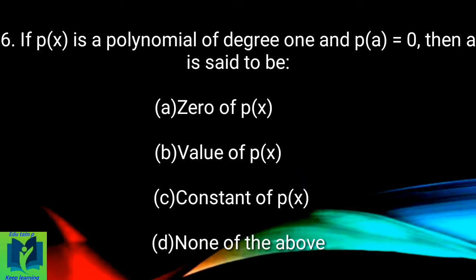If p(x) is a polynomial of degree 1 and p(a) is equal to 0, then a is said to be: (a) zero of p(x), (b) value of p(x), (c) constant of p(x), (d) none of the above.